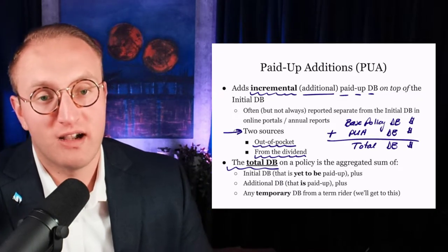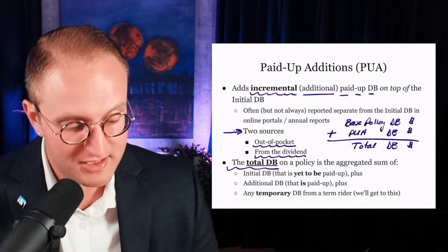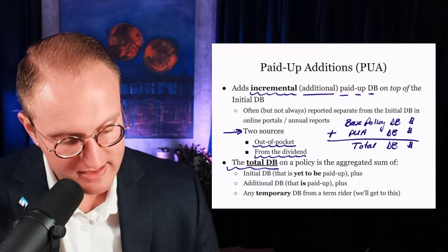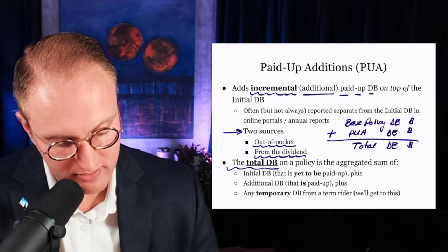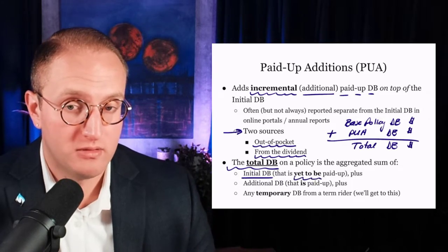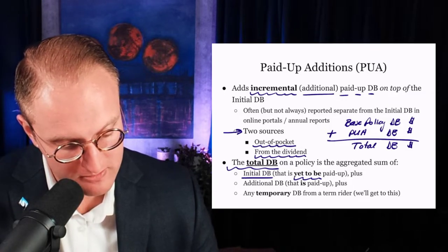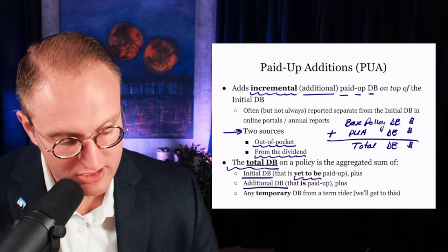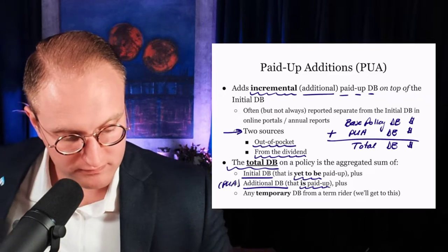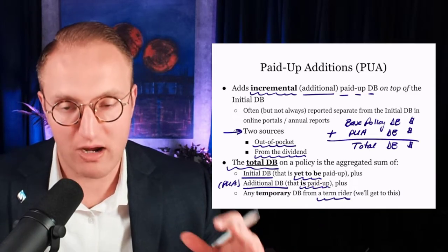The total death benefit on a policy is the initial death benefit that base premiums put in force — which isn't paid up until you've reached the end of the expected future base premiums — plus whatever additional paid-up death benefit comes from PUA, and any temporary death benefit from a term rider. Death benefit can come from other sources too, which we'll cover later.